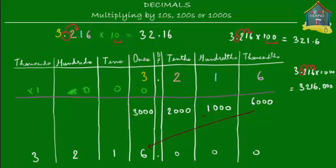To summarize: when multiplying a decimal by 1000, move the decimal point three places to the right because of the three zeros. For 100, move it two places; for 10, move it one place — one zero in 10.